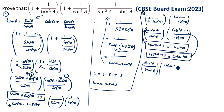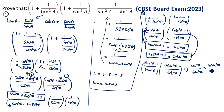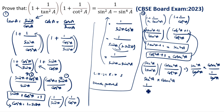This is cosecant square A divided by cos square A. So cosecant square A — how we will write? Secant square A divided by tan square A, into cosecant square A divided by 1 by tan square A. So this tan square A and tan square A are cancelled. Now what is that? Secant square A into cosecant square A. Secant square A is 1 by cos square A. Cosecant square A is 1 by sin square A. So how we will write: 1 by cos square A into sin square A.